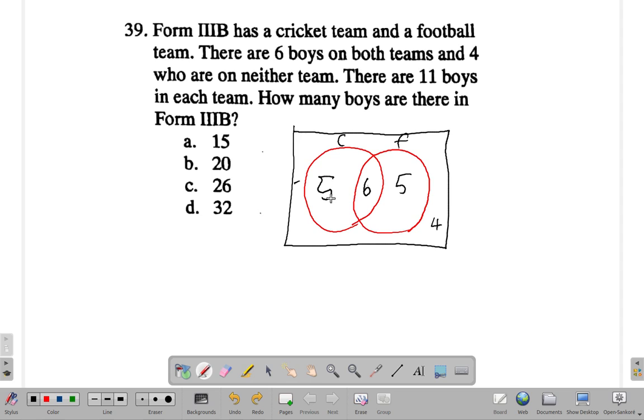So, five play cricket alone. Six play both cricket and football. Five play football alone. Four play neither cricket nor football.